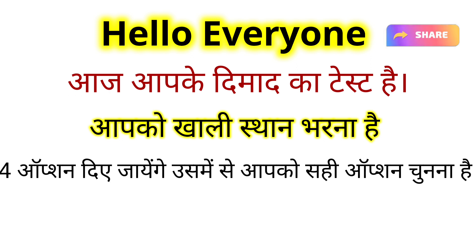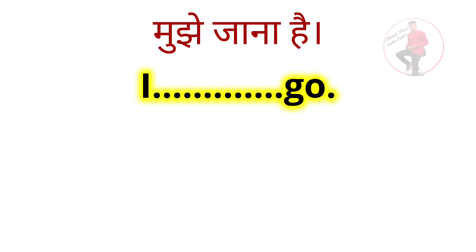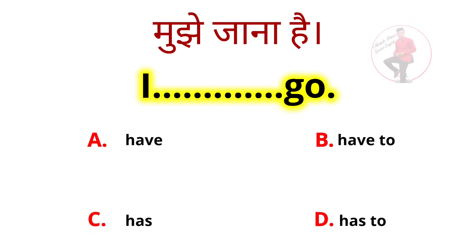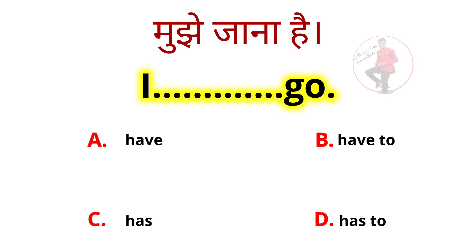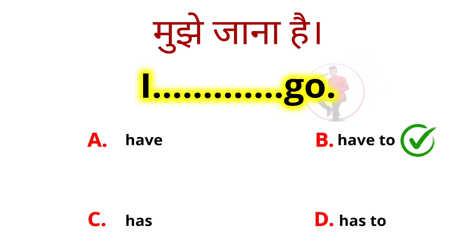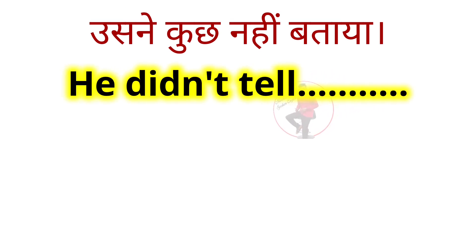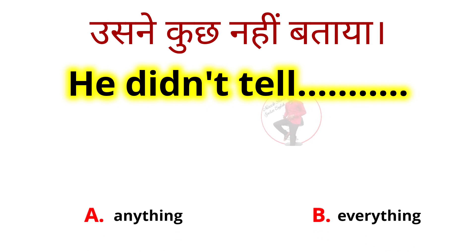The first sentence is: mujhe jana hai — I blank go. The options given are: have, have to, has, has to. Which is correct? The correct answer is 'have to' — I have to go.